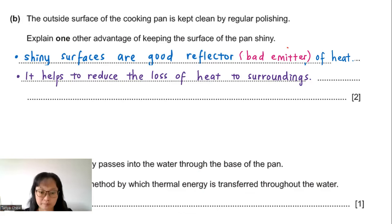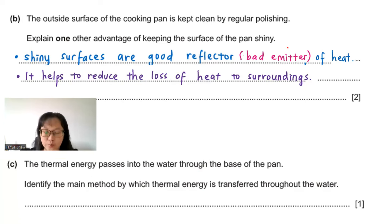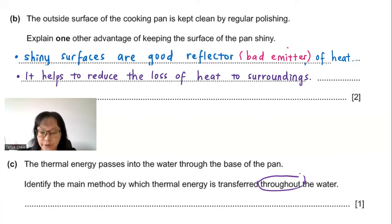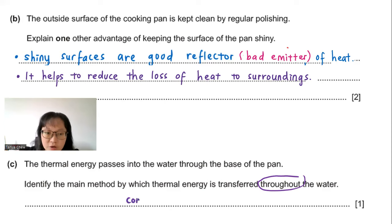Part C: Thermal energy passes into the water through the base of the pan. Identify the main method by which thermal energy is transferred throughout the water. Since this is about transfer throughout the water, the answer is convection — the circulation of heat within the water.